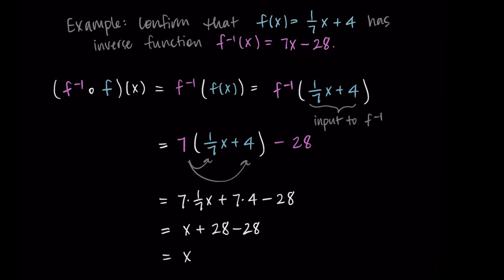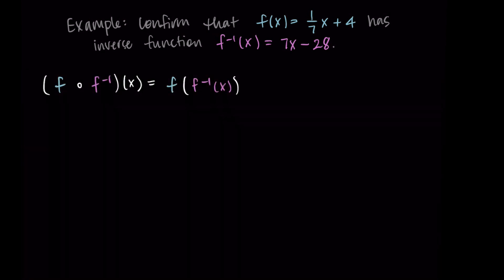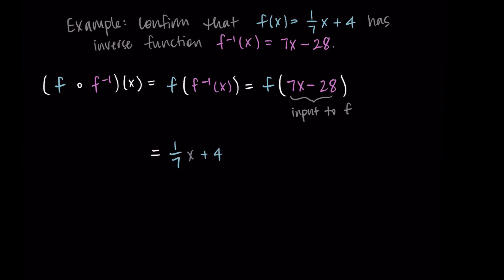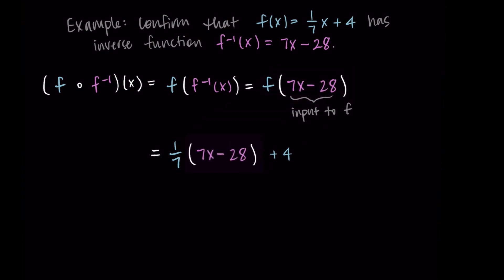Then we repeat this process going the opposite direction. Now we do f composed with f inverse of x, which is f of f inverse of x. So f inverse of x is the input to f. We take 7x minus 28 — that's f inverse — and this becomes the new input to my function f. What f does is one-seventh times the input plus 4, but here instead of x as the input, we have 7x minus 28. So we're doing one-seventh times (7x minus 28) plus 4.